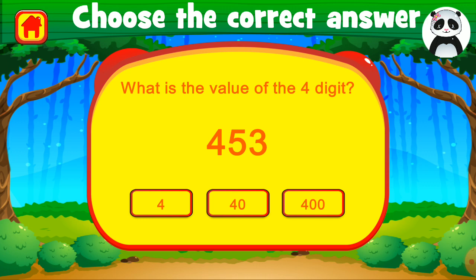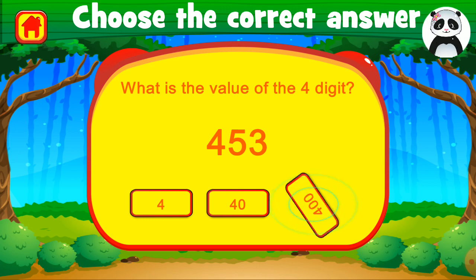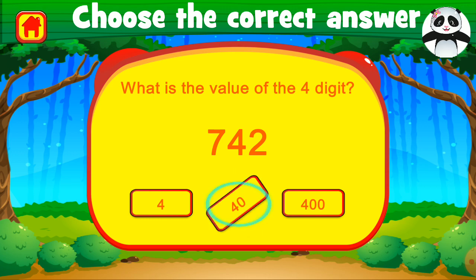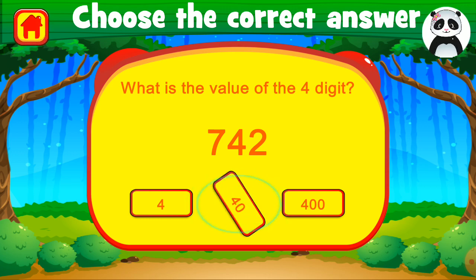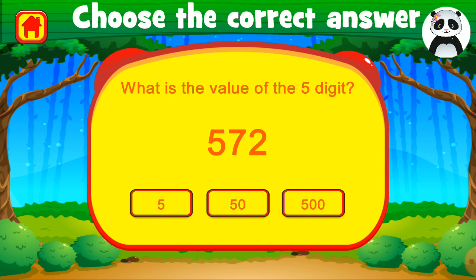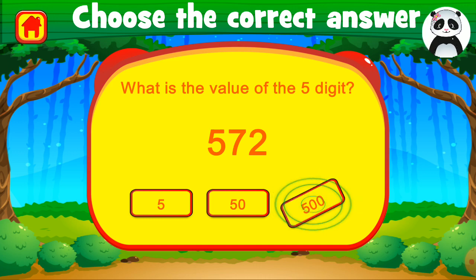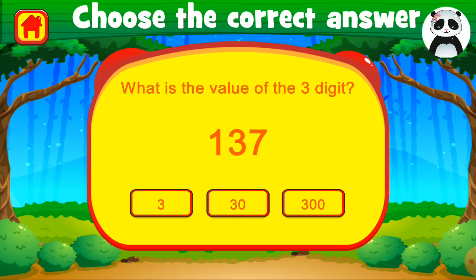The value of the four digit is 400. Excellent. What is the value of the four digit? The value of the four digit is 40, right on, because it is at the 10th place. What is the value of the five digit? The value of five digit is 500 because it is at the 100s place. Right on.